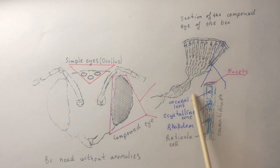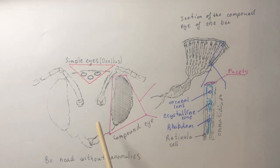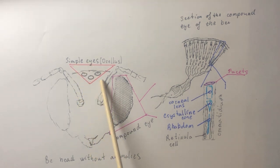Ommatidia are the basic structural units of the complex faceted eye of the bee. Usually, bees have five eyes: two large faceted eyes located on the sides of the head and three simple eyes on the vertex.